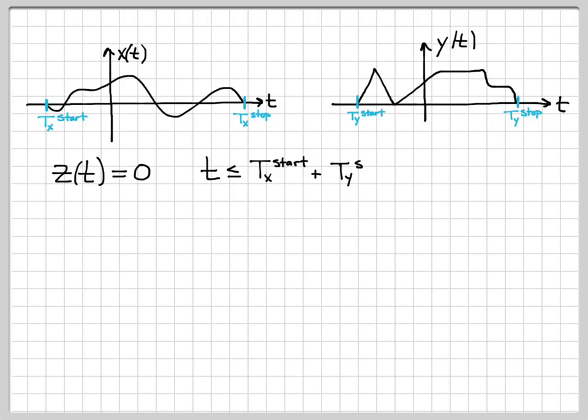It turns out that if you go through the details, and we're not going to prove this, but you've seen this over and over again in examples of convolution that we've worked, that z of t is equal to 0 for all times less than the summation of the start point. So for t less than or equal to t sub x start plus t sub y start. That is just the summation of the starting points of the underlying finite width signals. So for all times before this starting point, z of t is 0.